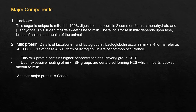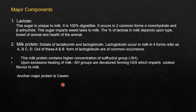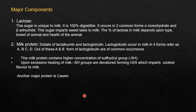Lactoglobulin occurs in milk in four forms referred to as lactoglobulin A, B, C, and D. Of these, A and B are in common occurrence. This milk protein contains a higher concentration of sulfhydryl (SH) groups. Upon excessive heating of milk, sulfhydryl groups are denatured, forming H₂S, which imparts a cooked flavor to milk — which is why there is a difference in taste between raw and boiled milk.